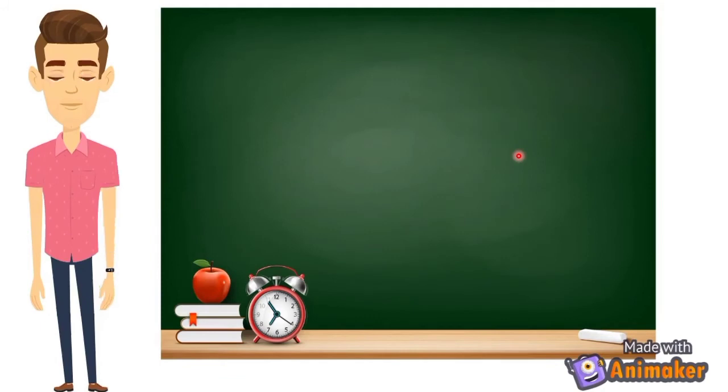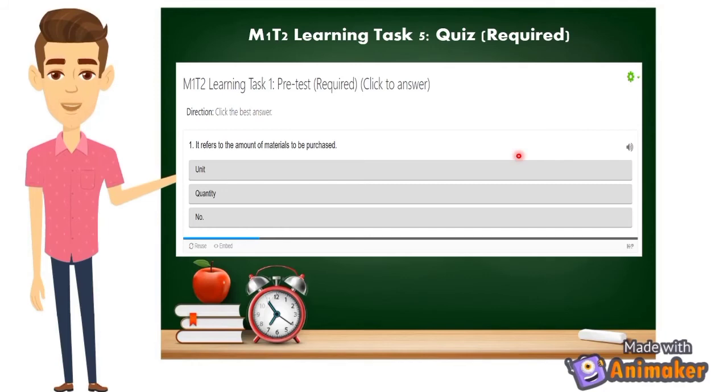Next, learning task number 5 which is your quiz. Again, 5 items only. All you have to do is to select the best answer. This is a multiple choice question.